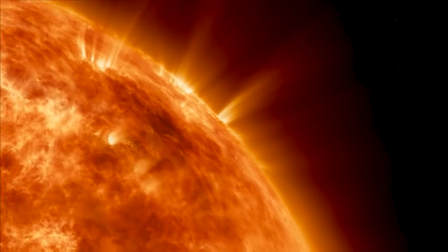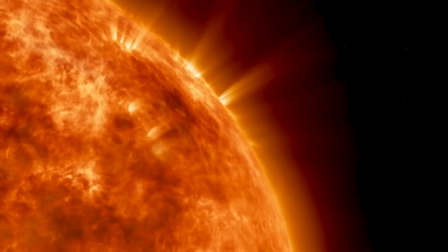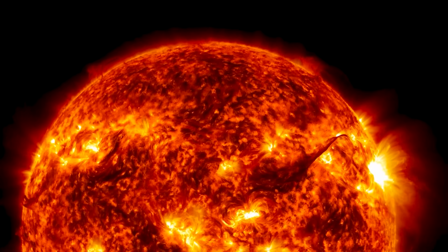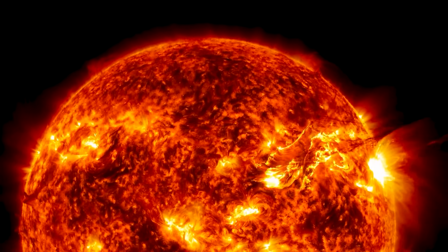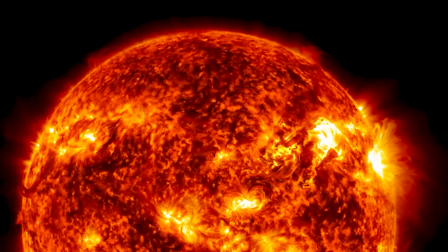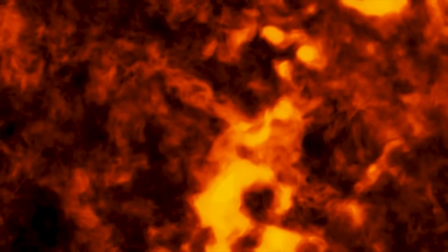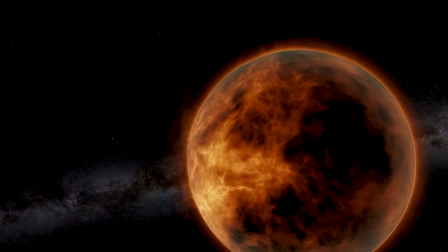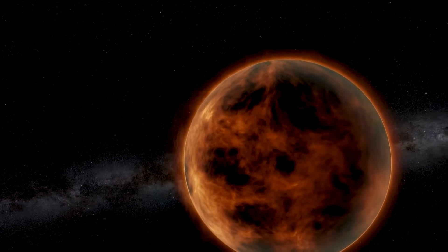Interestingly, the surface temperature of VY Canis Majoris averages around 3,500 Kelvin. This is due to its exceptionally large radius, which results in a significantly larger surface area compared to other stars. Consequently, its luminosity depends on at least 25% of its temperature. Even a slight decrease in temperature leads to a substantial reduction in brightness.